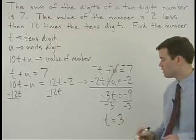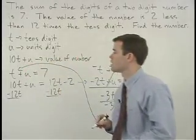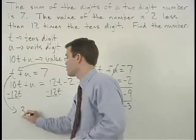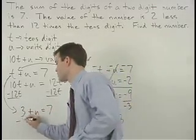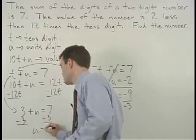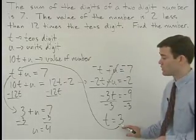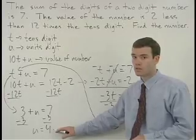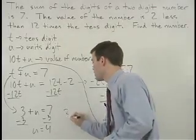To find u, plug 3 back in for t in our first equation to get 3 plus u equals 7. Subtract 3 from both sides and u equals 4. Since our tens digit is 3 and our units digit is 4, our number must be 34.